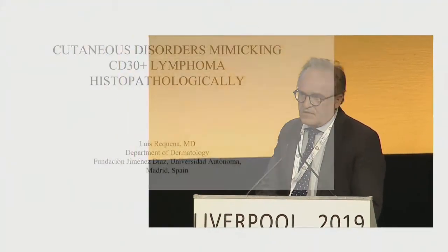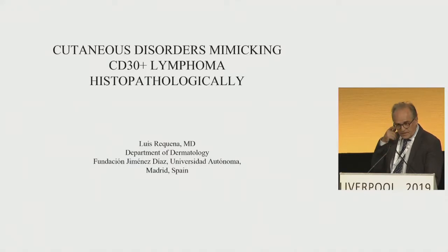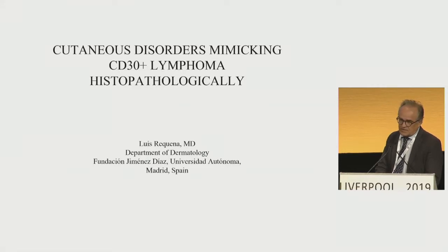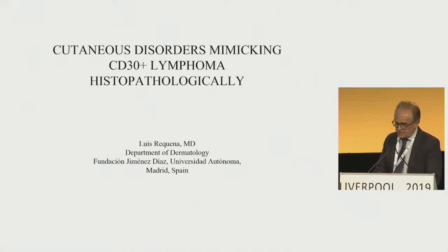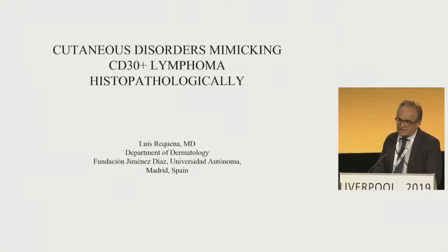Every time that we see an atypical lymphocyte positive for CD30, we usually think of lymphomatoid papulosis if the patient has multiple lesions, or anaplastic large cell lymphoma if it's a solitary tumoral lesion. During the last year, I have been collecting cases where we saw atypical lymphocytes, and when we stained for CD30, many of them were positive and were completely benign inflammatory processes. It's important to know there are cases that are completely reactive benign lesions and can express CD30 in the lymphocytes.